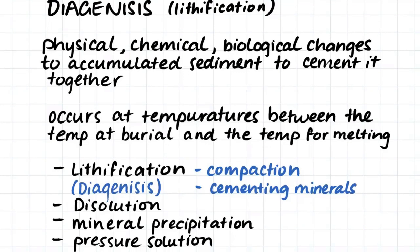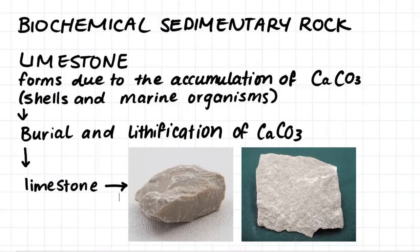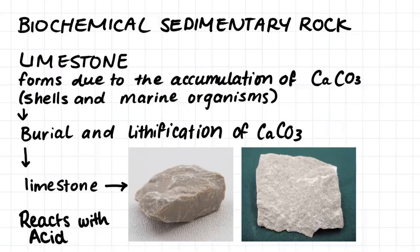Now we've talked about how clastic sedimentary rocks form and the terms we use to describe and classify them. We're also going to talk about one particular biochemical sedimentary rock which is rather important and will pop up quite often: limestone. Limestone forms due to the accumulation of calcium carbonate, which forms in the ocean — the accumulation of shells and marine organisms. This accumulated calcium carbonate gets buried and lithified just like clastic sedimentary rock and then turns into limestone. Here are a few samples of limestone to give you an idea of what it looks like. One way to discover whether a rock is limestone is to drop some acid on it — because of its chemical composition, limestone reacts with acid and will bubble and disintegrate.